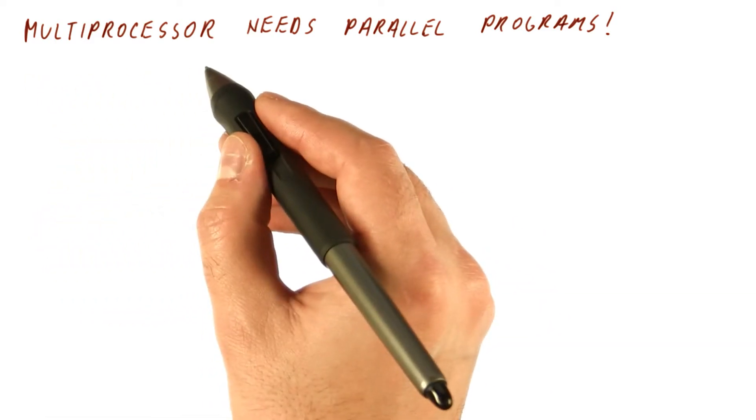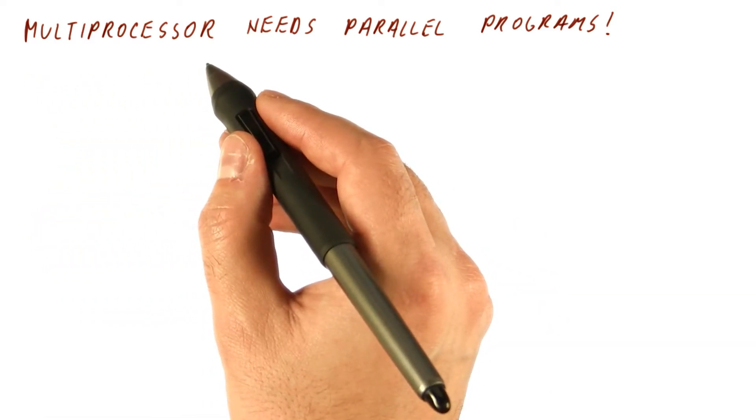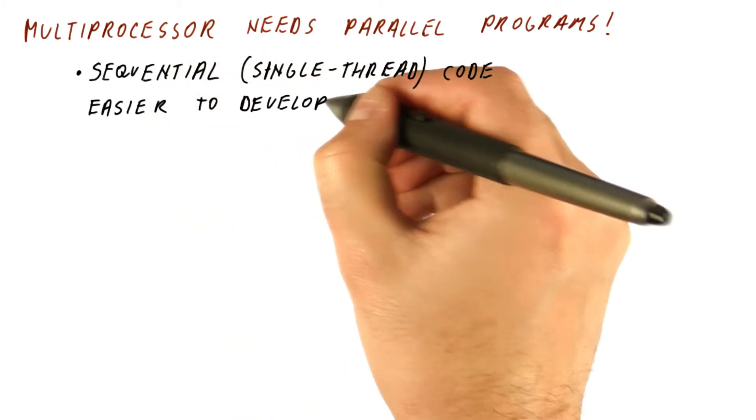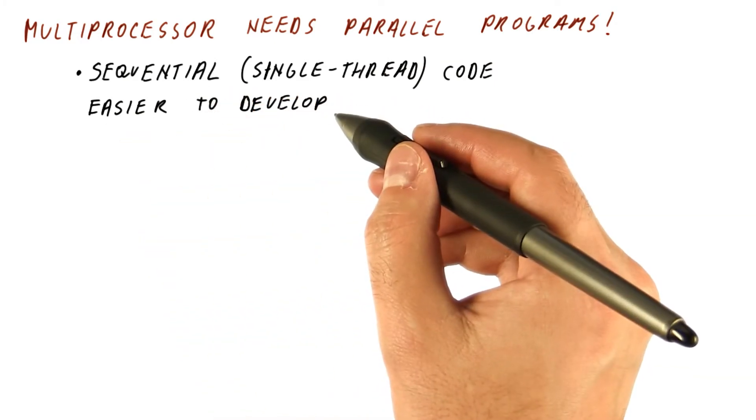There are some disadvantages to going to multiprocessors from single core processors. One is that sequential or single-threaded code is easier to develop for programmers.